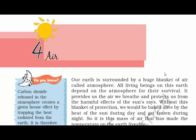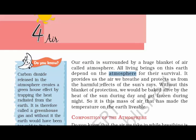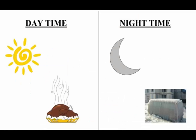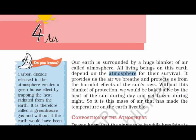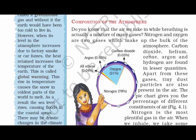Earth is surrounded by a huge blanket of air called the atmosphere and we are all dependent on it for our survival. It not only provides us the air we breathe, it also protects us from the harmful effects of the sun's rays. If there was no atmosphere, two things would have happened: we would have been burned alive by the heat of the sun during the day, and at night we would get frozen. So it is the mass of air that has made the temperature on Earth livable.